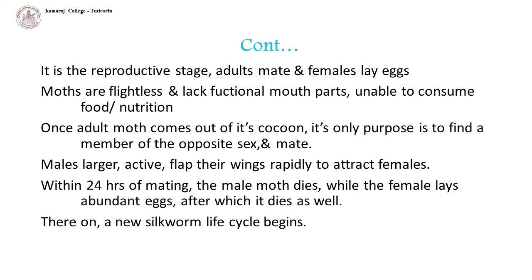Once the adult moth comes out of its cocoon, its only purpose is to find a member of the opposite sex and mate. Males are more active and flap their wings rapidly to attract females. Within 24 hours of mating, the male moth dies, while the female lays abundant eggs, after which she dies as well. Thereon, a new silkworm life cycle begins.